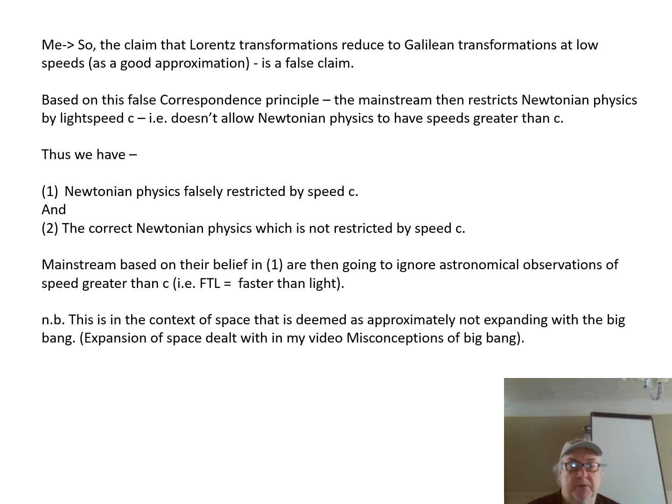You've got the version where Newtonian physics is forcefully restricted by the speed c, and the other one, the correct version of Newtonian physics where it's not restricted by the speed c. And mainstream are basing their belief on the first one where speeds are restricted by light speed c, and they're going to ignore astronomical observations of speed greater than c, that's abbreviated as FTL, faster than light.